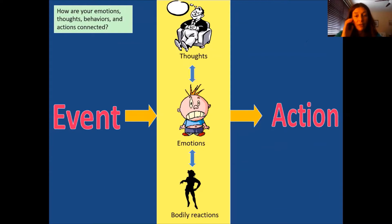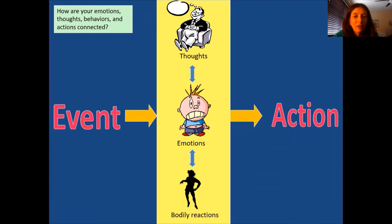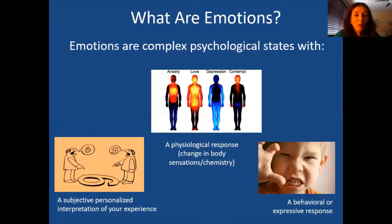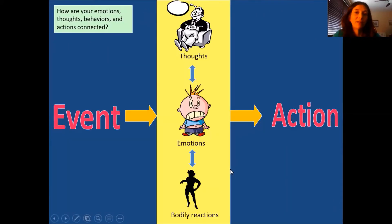Here's another diagram I'll use in other videos. It sums things up nicely: a lot of times there's some kind of internal or external event that happens. Then in the center, we experience a mix of emotions, thoughts, and body sensations — with double arrows because they all interact and influence each other. Based on what goes on in that middle section, we end up taking an action. This diagram incorporates what we just talked about, just expressed in a slightly different way.